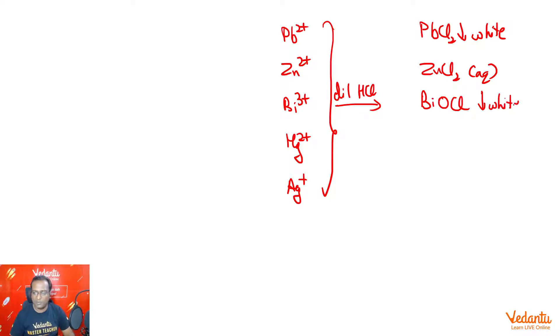Hg2+ will form HgCl2 which is soluble in nature. And Ag+ will form AgCl which is white.